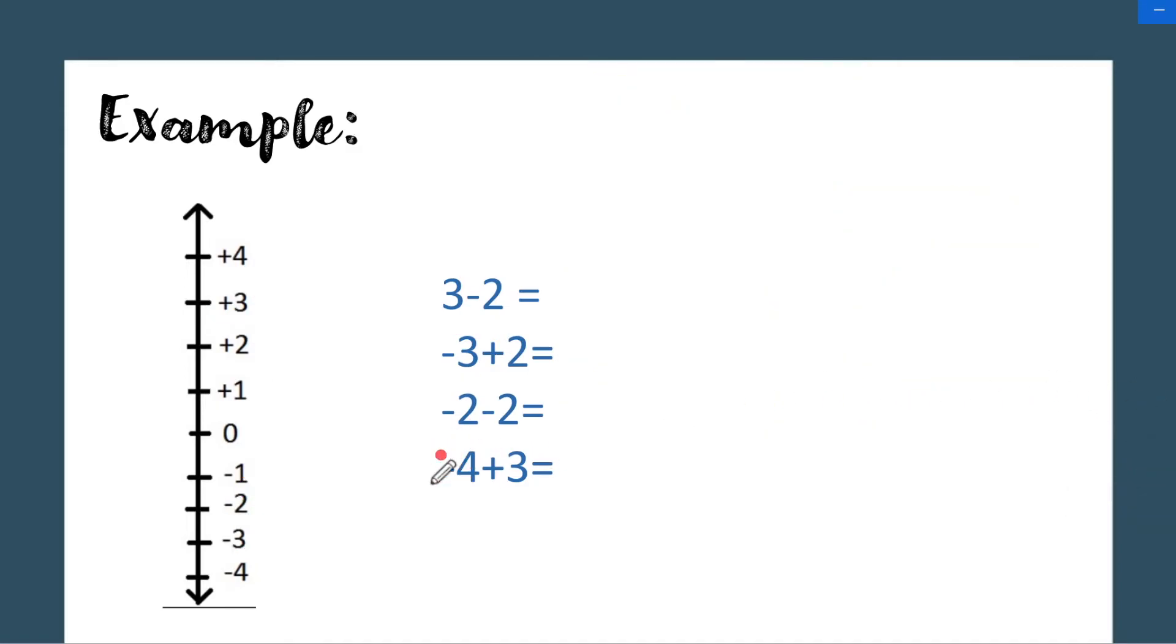In here, you start at -4 and you go 3 units up, 1, 2, 3. Or if you want to think about this in terms of positives and negatives, you have 4 negative units and you have 3 positive units. So the 3 positives are going to cancel 3 negatives and you only have 1 unit left which is a negative unit. Either way you want to do this activity is going to work.